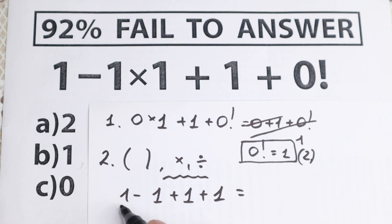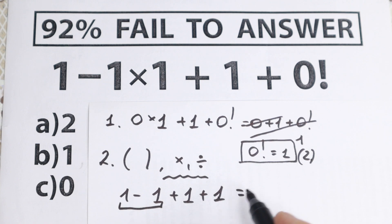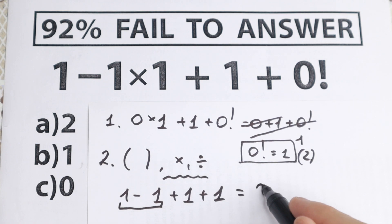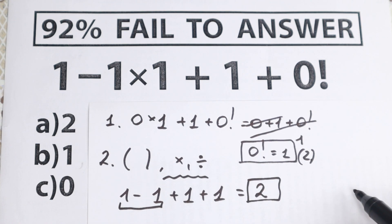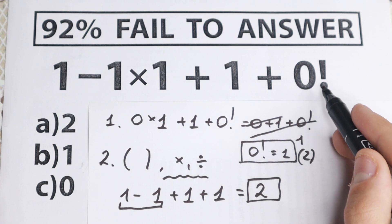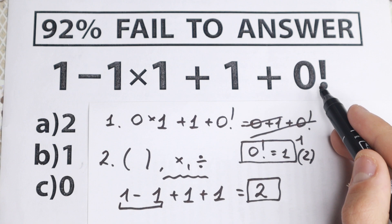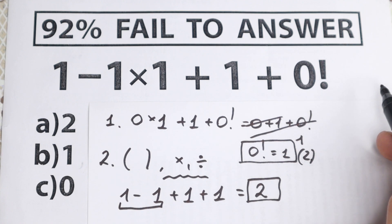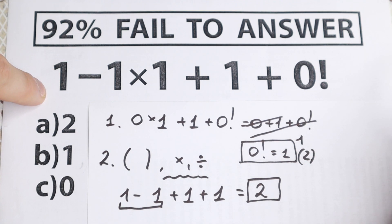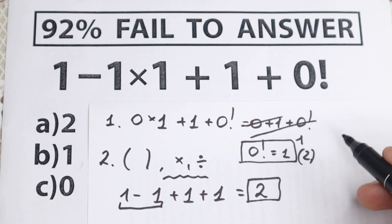So now we have 1 minus 1 plus 1 plus 1. Then: 1 minus 1 is 0, and 1 plus 1 equals 2. Our answer is 2. To recap the two common mistakes: 0 factorial equals 0 is incorrect — 0 factorial equals 1. And the second mistake is starting with the subtraction instead of multiplication first.